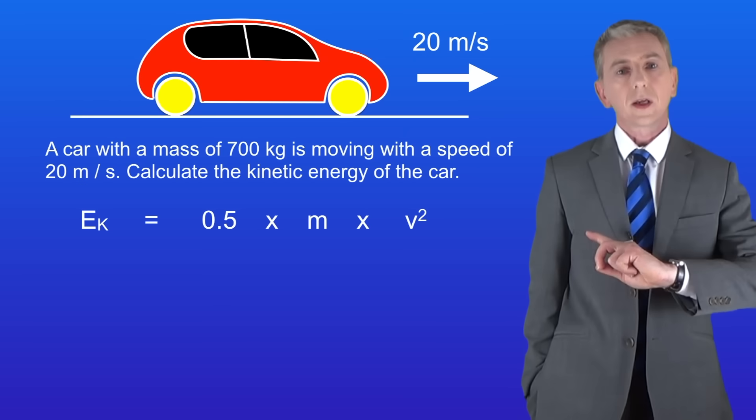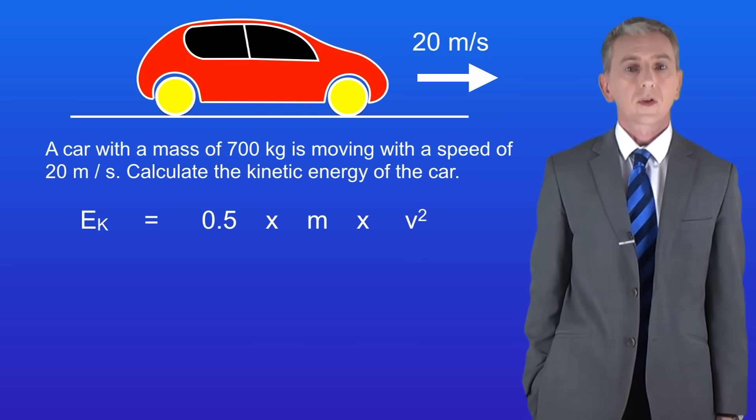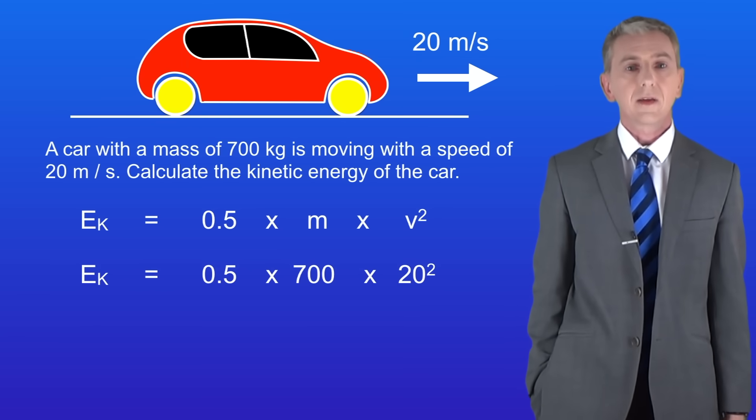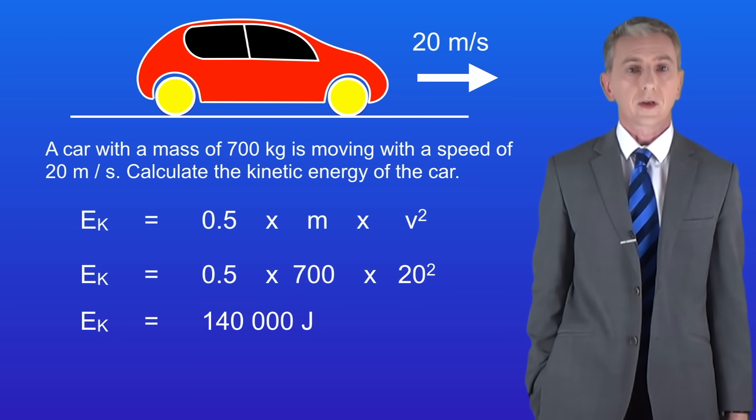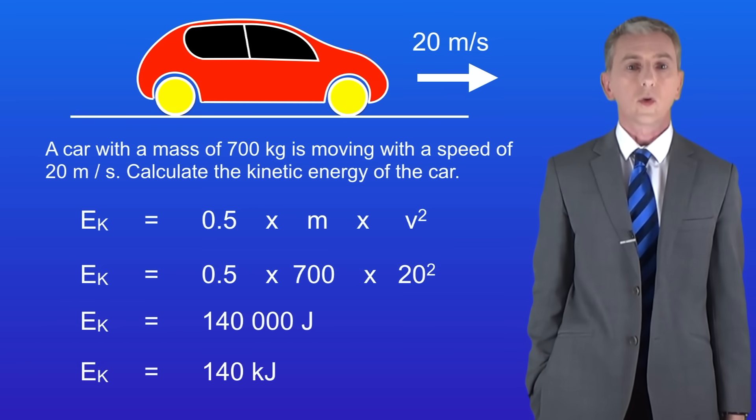So here's the equation. Kinetic energy equals 0.5 multiplied by the mass multiplied by the speed squared. The mass is 700 kilograms and the speed is 20 meters per second. Putting these numbers into the equation gives us a kinetic energy of 140,000 joules. Now scientists often convert joules into kilojoules. To do this we divide by 1000. So in this case the kinetic energy is 140 kilojoules.